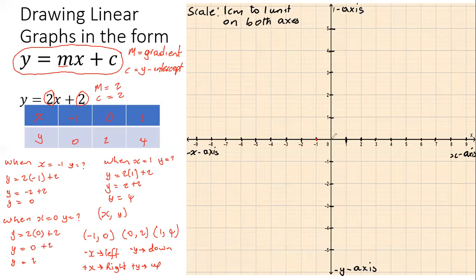For the second point (0, 2): there is zero movement on the x-axis, so we stay at the origin horizontally, and move two units up on the y-axis. That point sits right here on the y-axis.